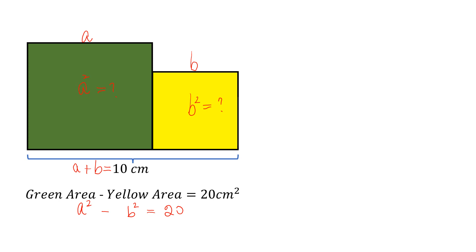We know that (A + B)(A - B) equals A² minus B². We substitute the values here: A plus B is 10, times A minus B, and this equals 20. Dividing both sides by 10, we get A minus B equals 2.